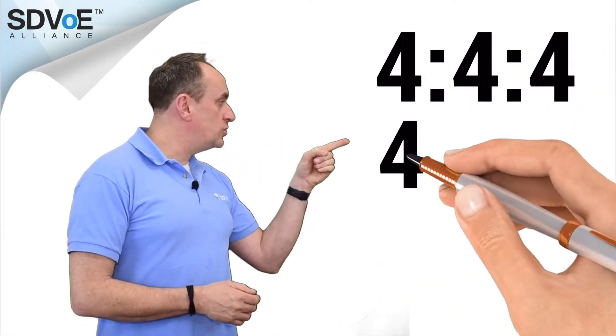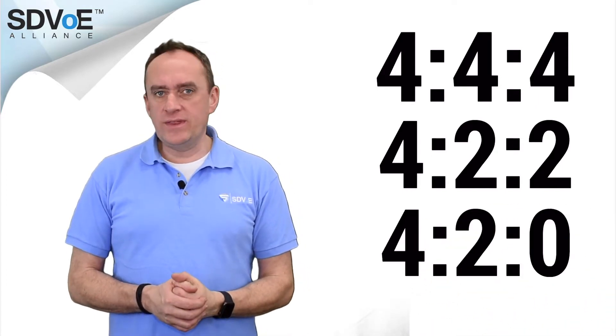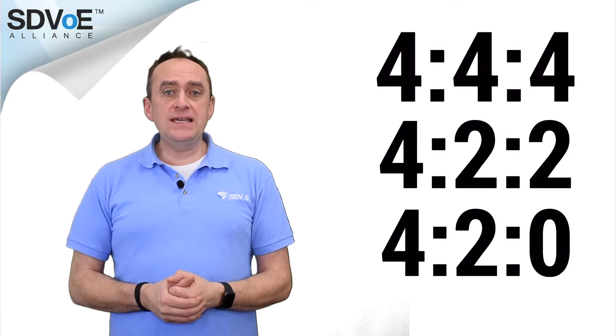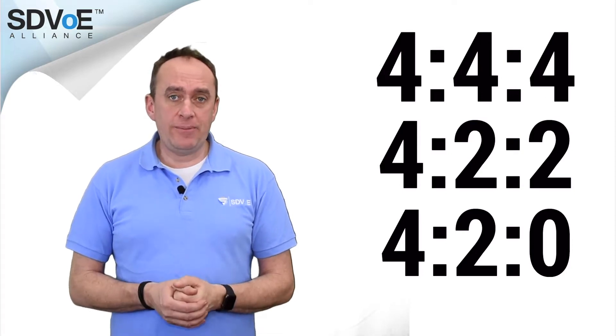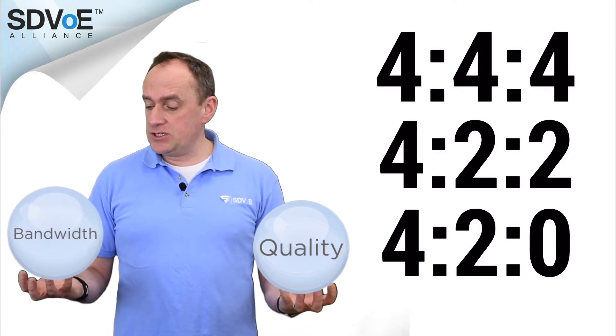We often hear 4K video referenced by a three-digit ratio, like 4:4:4, 4:2:2, and so on, and it can be really frustrating if we don't know what these mean. This short video will explain these numbers and give you clarity about how they affect both the quality of the image and the bandwidth usage that they represent.